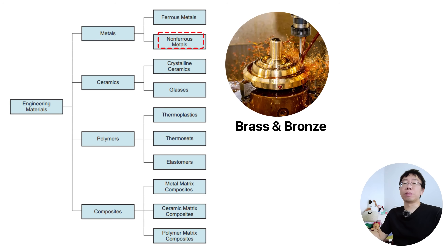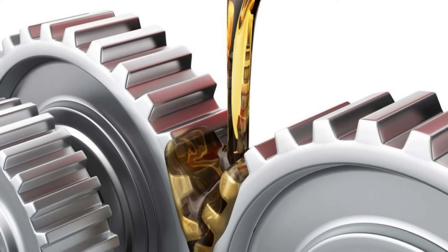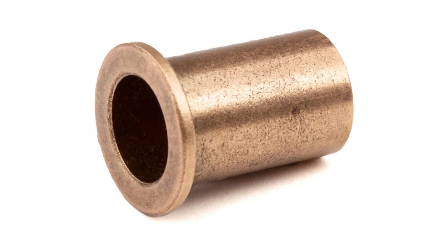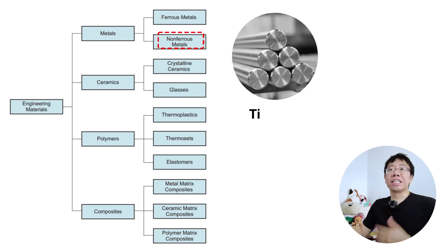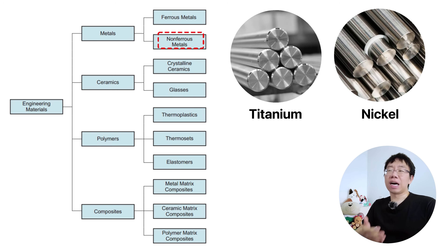Copper alloys like brass and bronze are selected for electrical conductivity or low-friction applications like bushings. Titanium combines corrosion resistance with high strength at elevated temperatures. Nickel-based alloys dominate extreme thermal and chemical environments.